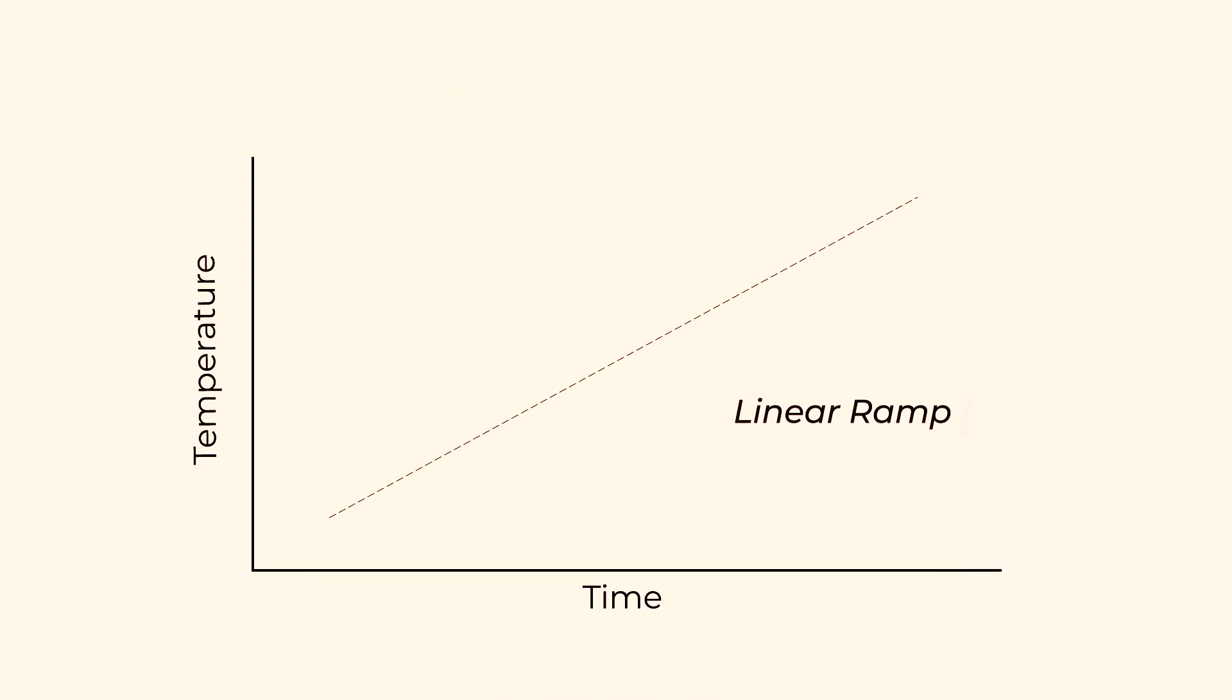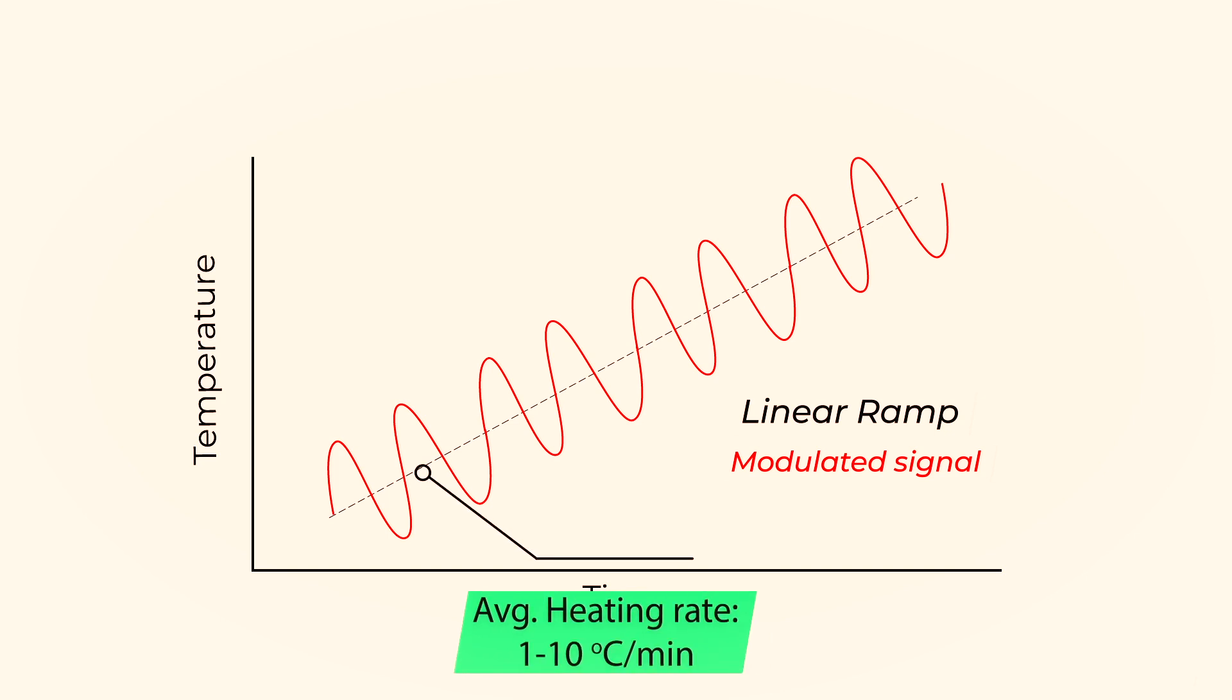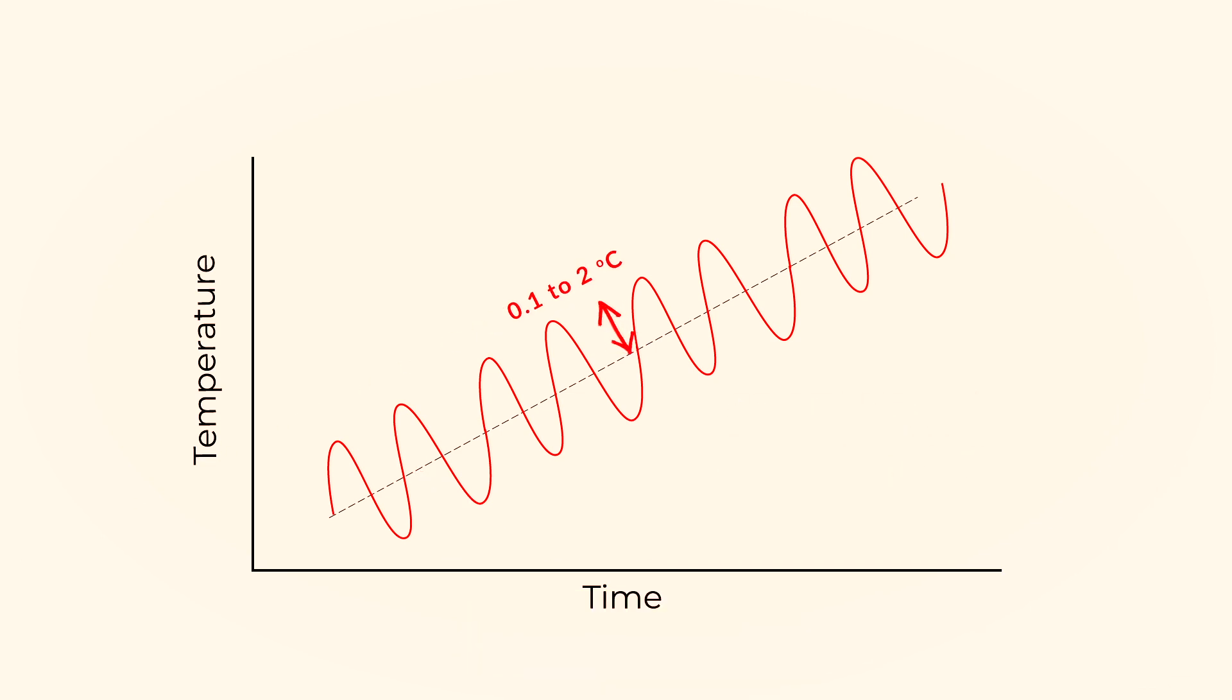In MDSC, a different heating profile is applied to the sample and reference. Specifically, a sinusoidal modulation is overlaid on the conventional linear heating or cooling ramp to yield the profile in which the average sample temperature continuously changes with time, but not in a linear fashion. There are three main parameters which are used to control the MDSC experiment. The first is the average heating rate, which is kept between 1 to 10 degrees C per minute. A temperature modulation period between 30 to 100 seconds is maintained. And the last parameter is the temperature amplitude, which is generally around 0.1 to 2 degrees C.